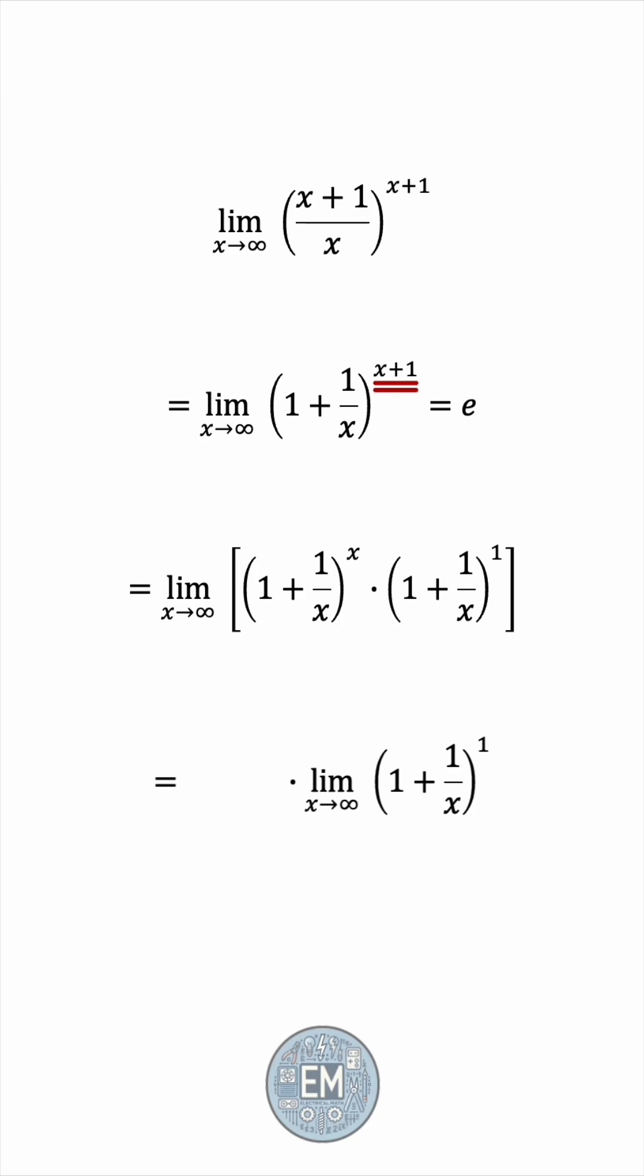The first one is exactly e, and the second one, well, 1 over x goes to 0 as x goes to infinity, so this is just 1. Whichever way you think about it, the final answer is e.